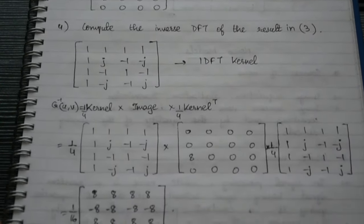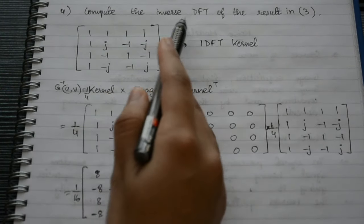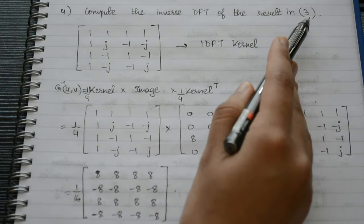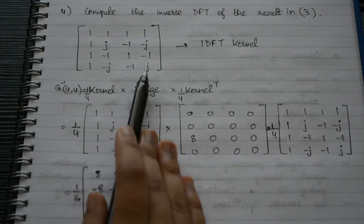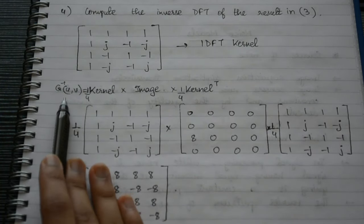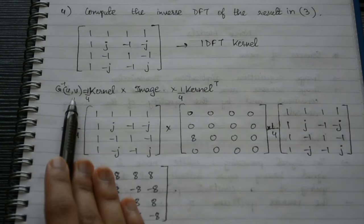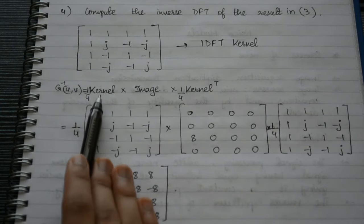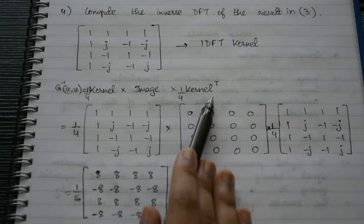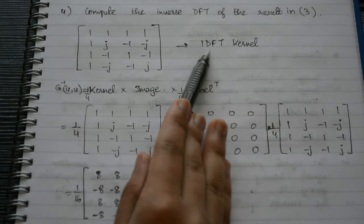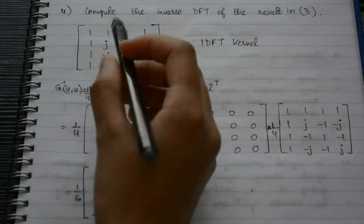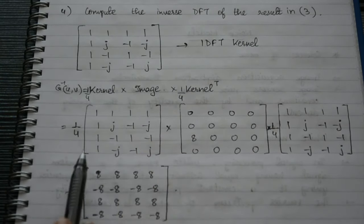Step 4: compute the inverse DFT of the result from step 3. The IDFT formula is (1/4) × kernel × image × (1/4) × kernel^T. Note that the IDFT mask is different from the DFT mask — the negative signs are different, so keep that in mind. Performing these multiplications gives us the result back in the spatial domain.